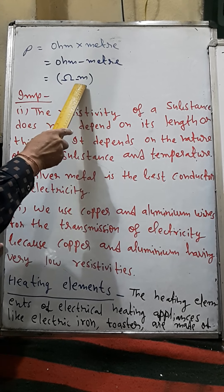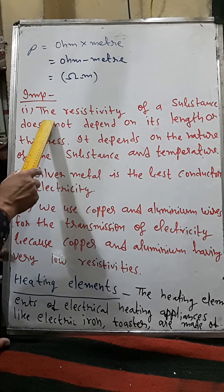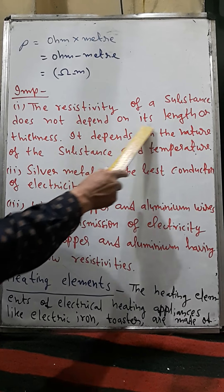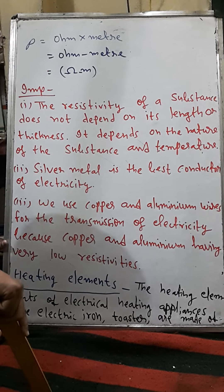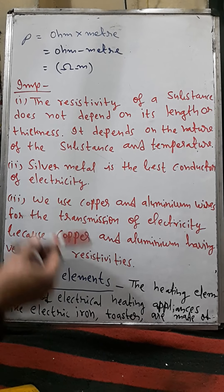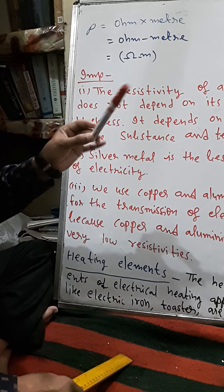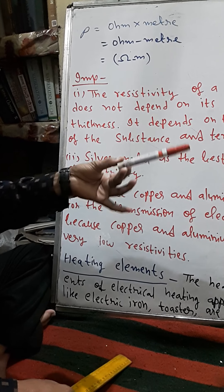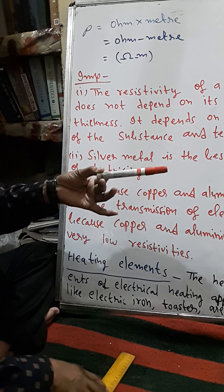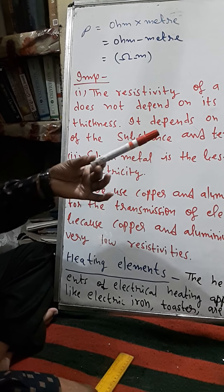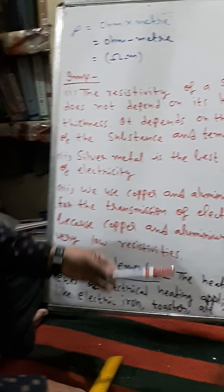Now some important points about resistivity. Number one: the resistivity of a substance does not depend on its length or thickness — it depends on the nature of the substance and temperature. So for a given conductor, its resistivity will not change with length or thickness, unlike resistance which does depend on length. This is the key difference between resistance and resistivity.